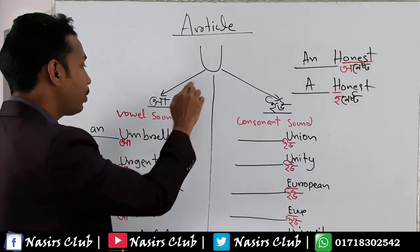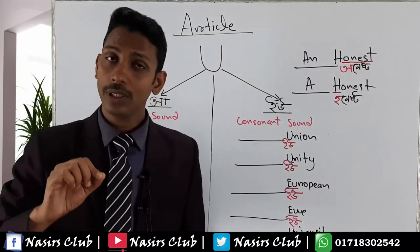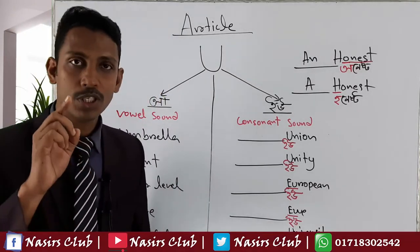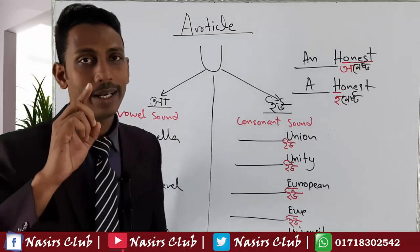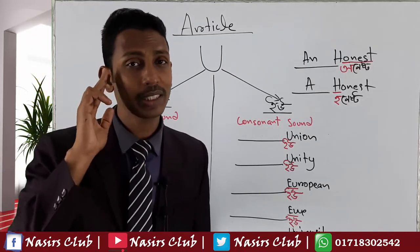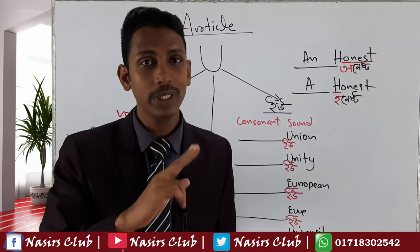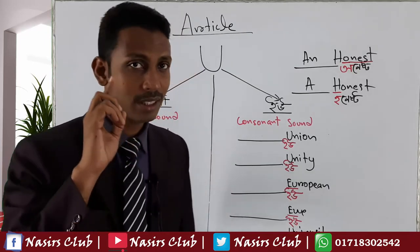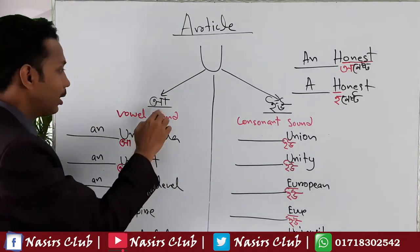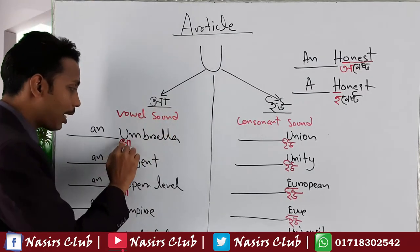The vowels are A, E, I, O, U. When a word has a vowel sound at the beginning, in that case we will use 'an'. Here is a letter — if there is a vowel sound, we use 'an'. Now let's look at the vowel sounds more carefully.